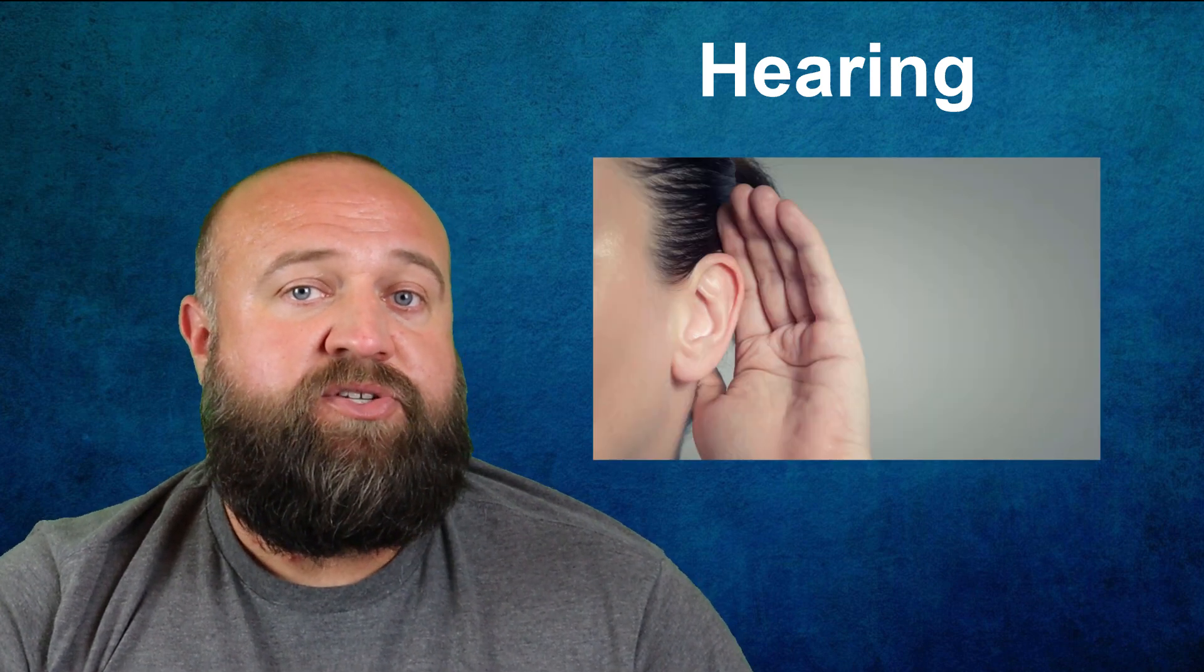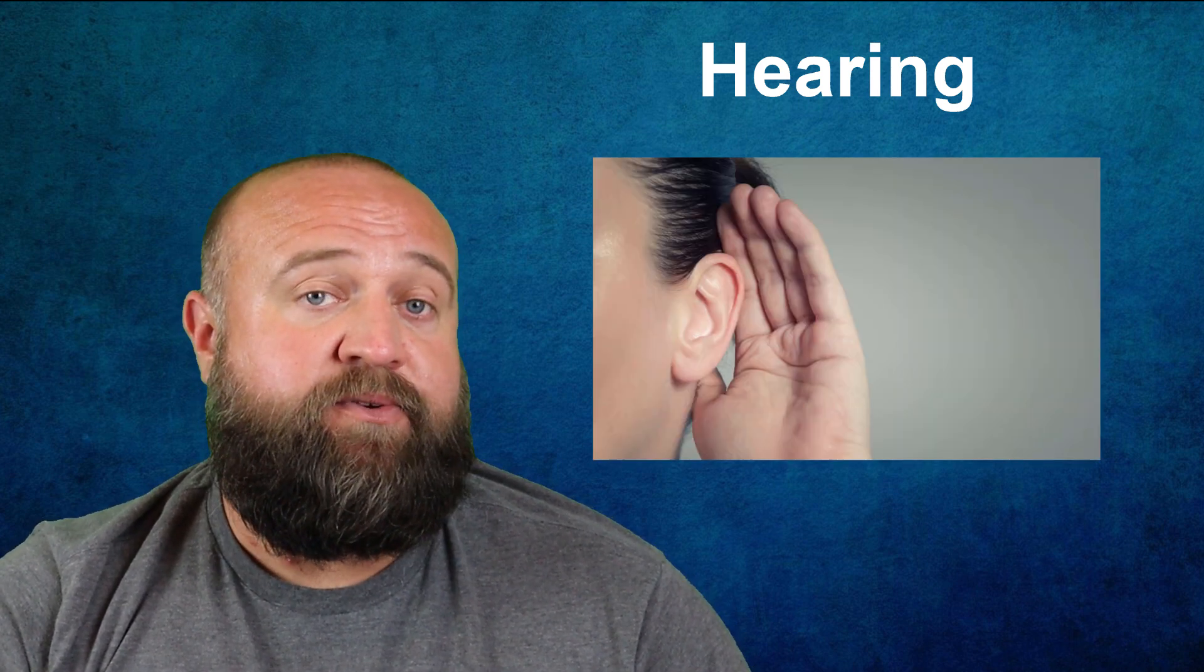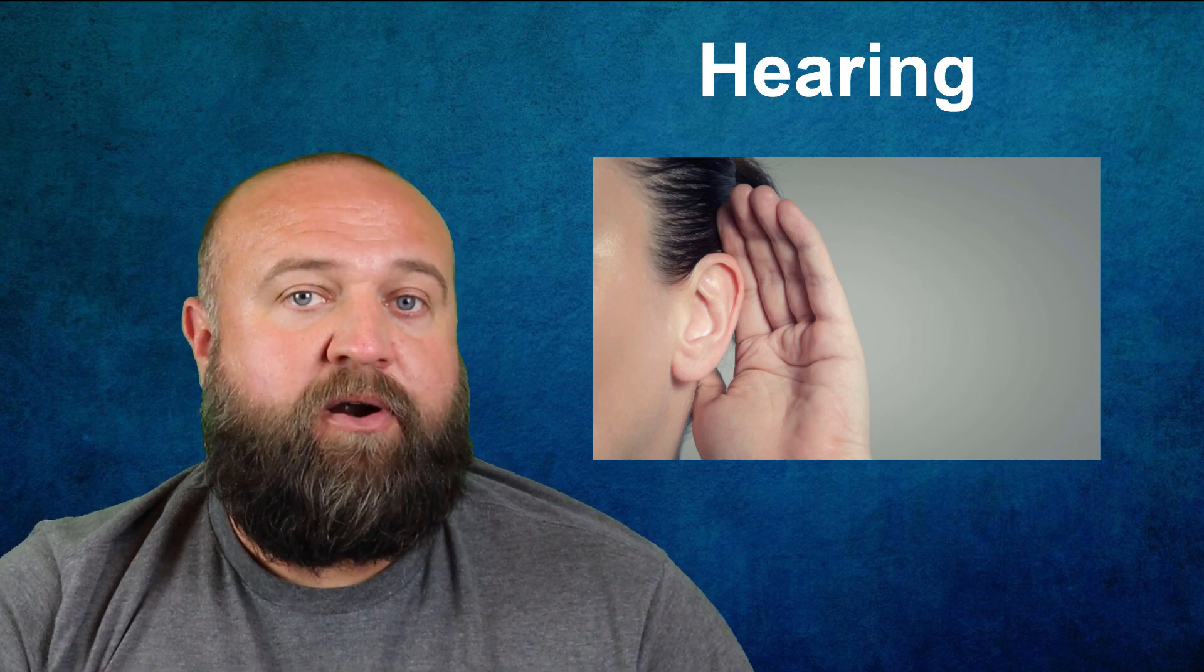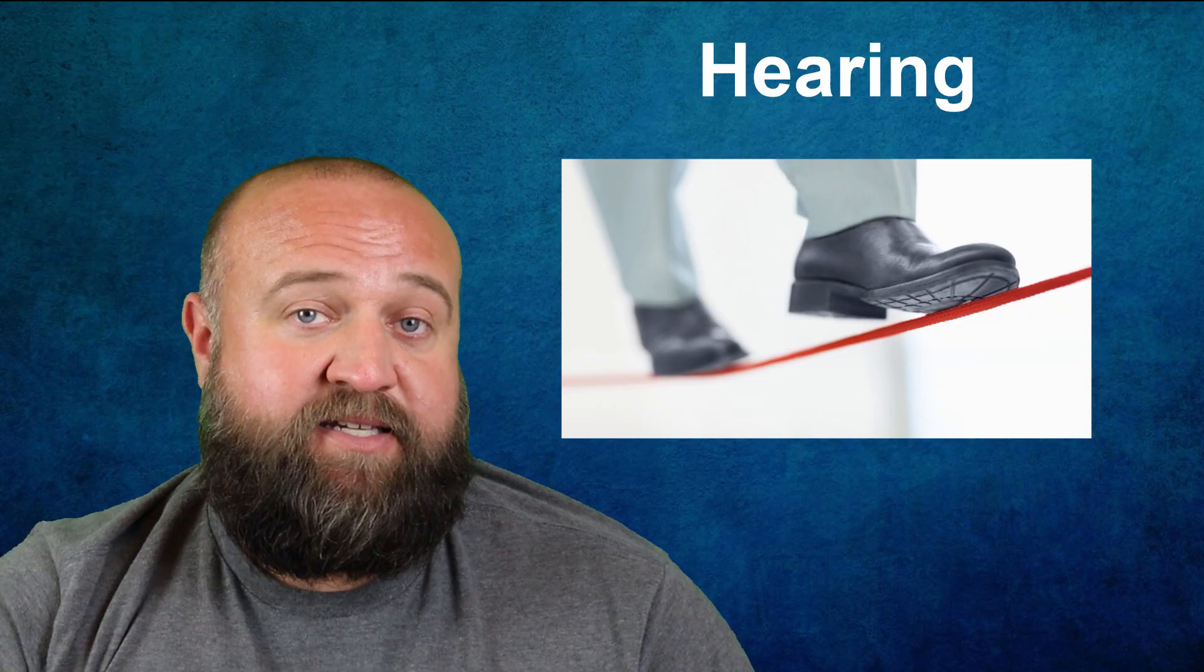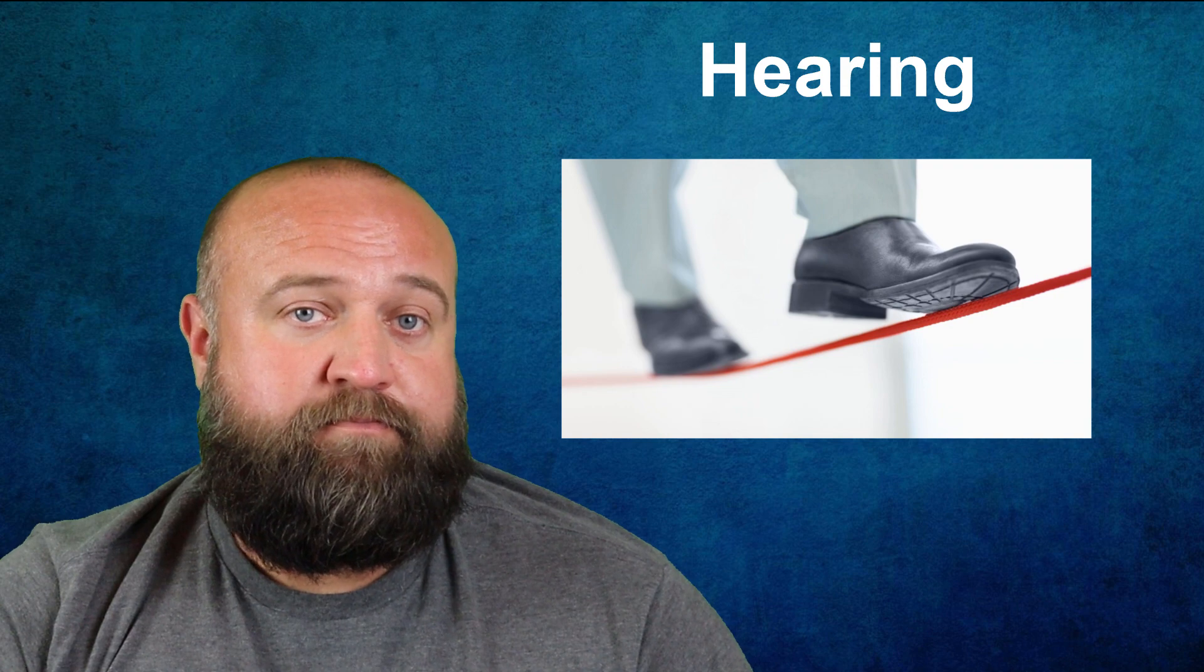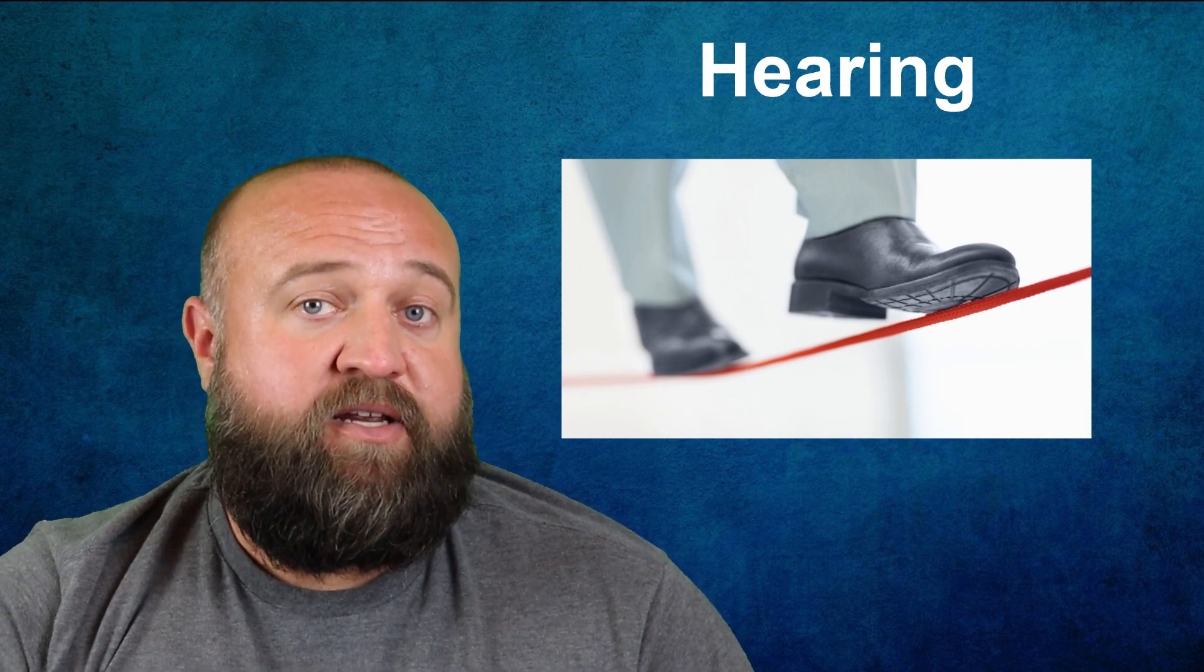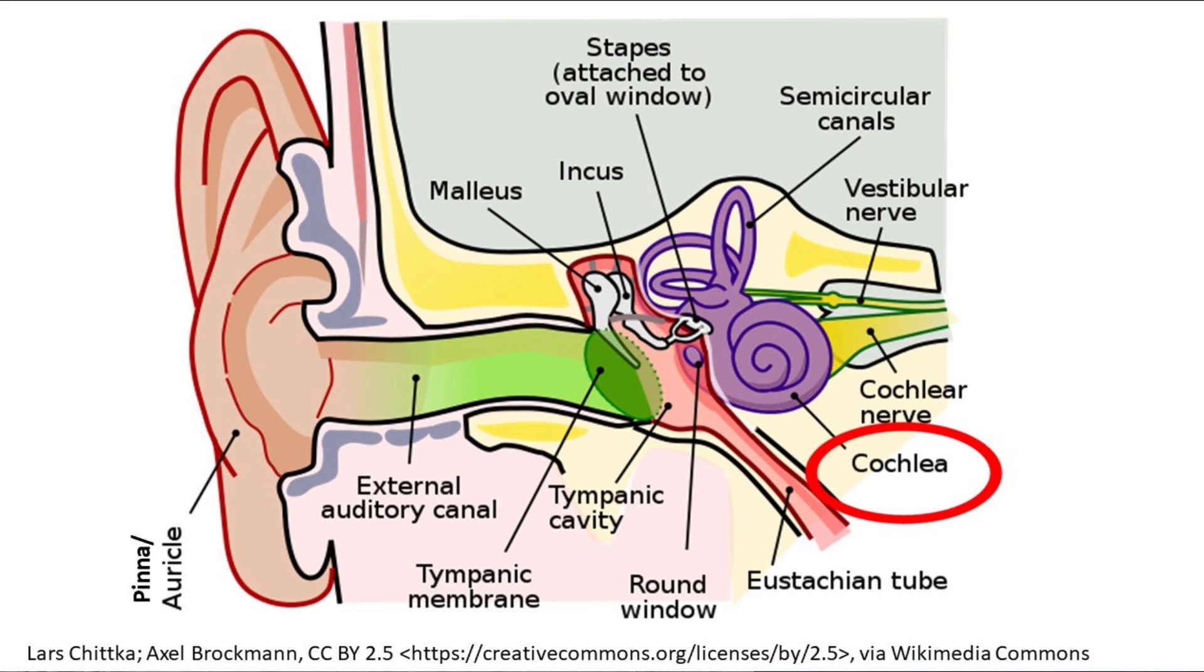The inner ear is really two separate parts that engage in different functions. The first part is known as the semicircular canals. These are tube-like structures that are involved in balance, and I'll get back to that later. The other part of the inner ear is the cochlea, which looks kind of like a snail shell.